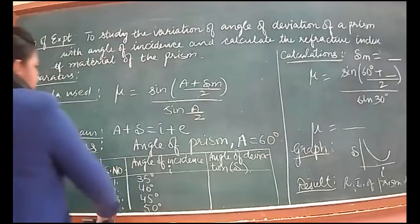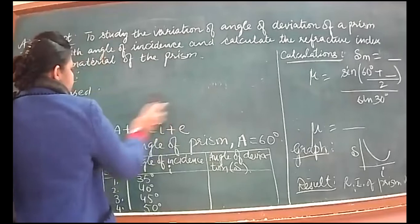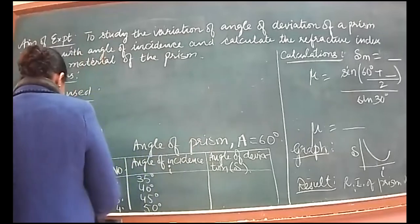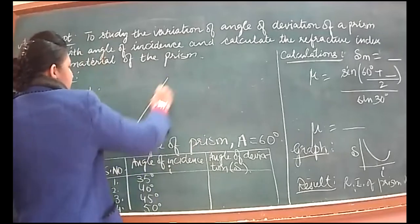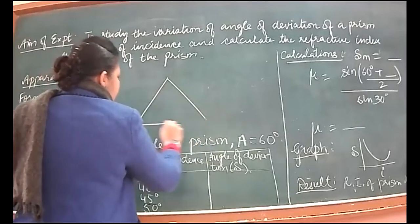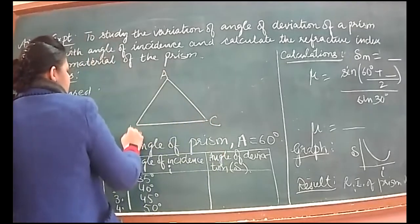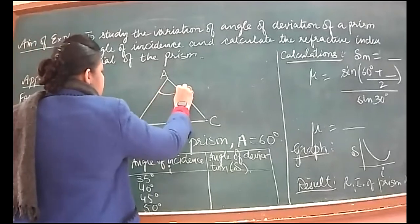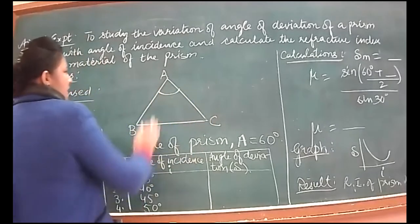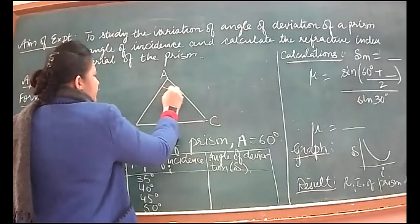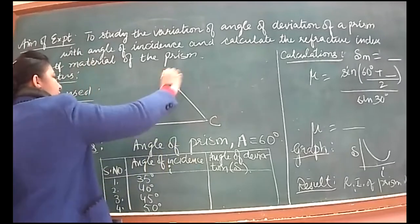I am drawing this for one case. This is our prism A, B, C. This is the angle of prism, 60 degrees. Now what we will do? On AB face, I am taking a center point in the middle.